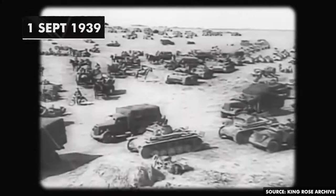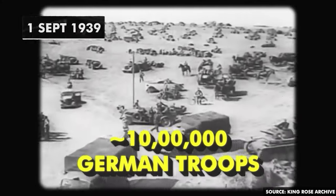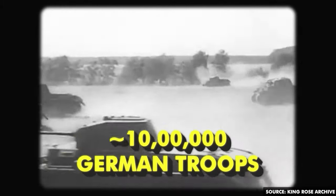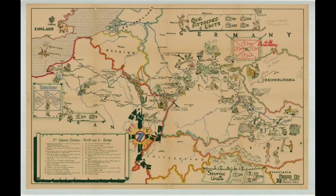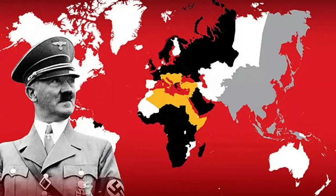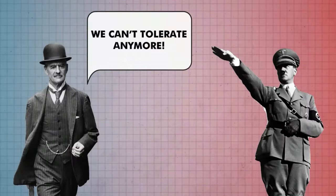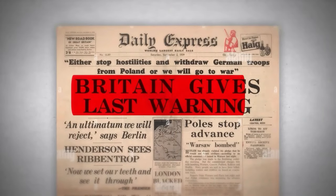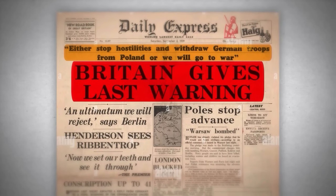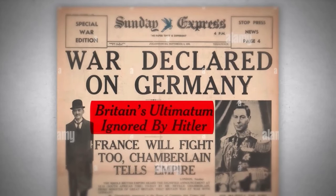On the 1st of September 1939, nearly 1 million German troops started moving towards Poland, planning to attack from the north and south simultaneously. Other countries were shocked. The UK and France were at the edge of their patience, fearing that if Hitler continued invading one country after the other, their number could be next. The UK gave an ultimatum to Hitler: if they went ahead with Poland's invasion, they would declare war against Germany. Hitler ignored the ultimatum.